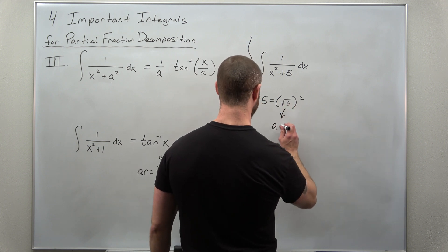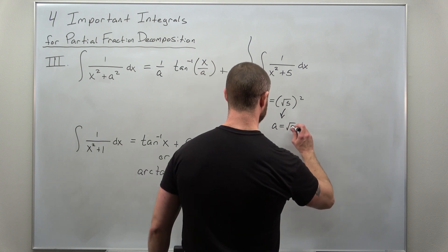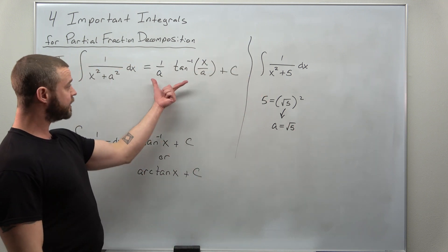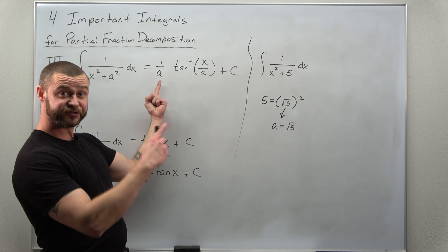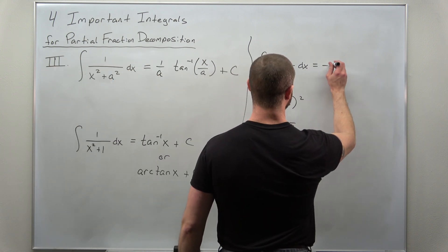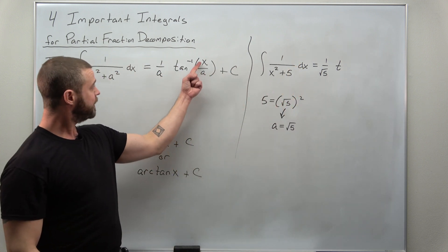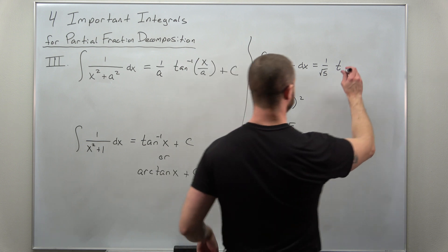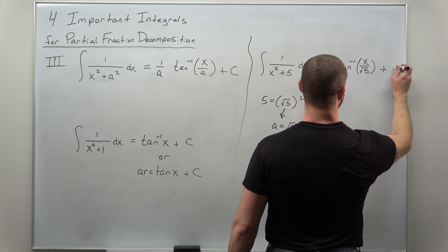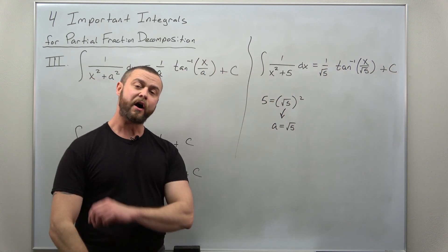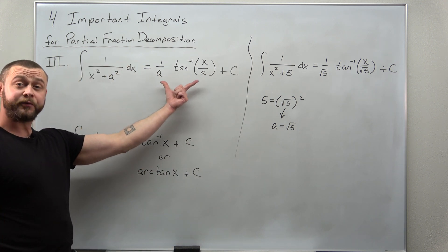We just need to plug this into our integration formula, and we'll very quickly get that antiderivative. We get a 1 over square root of 5 factor and then times inverse tangent of x over square root of 5. And that is our third way to evaluate an important integral, which comes down to knowing this formula.